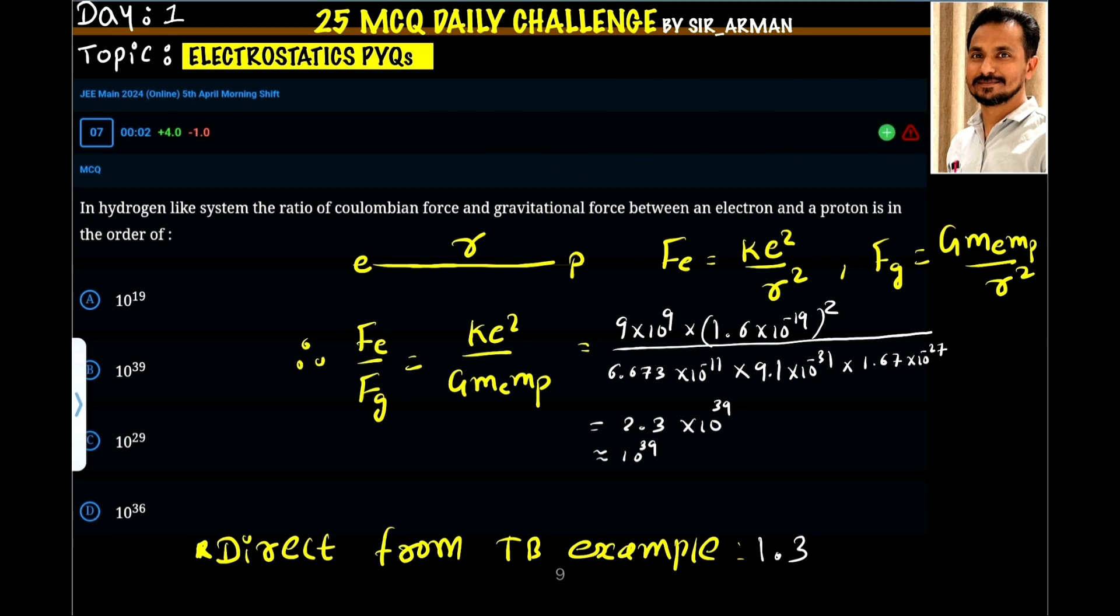Now we can take just the ratio of these two quantities. So F electric by F gravity. So R square, R square will get cancelled.